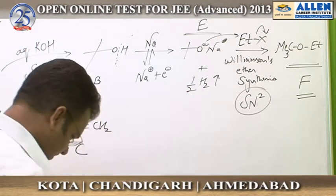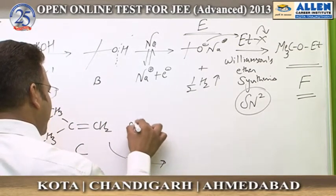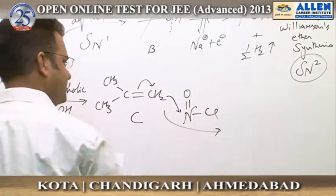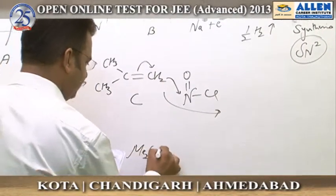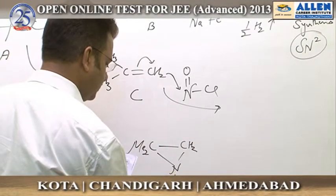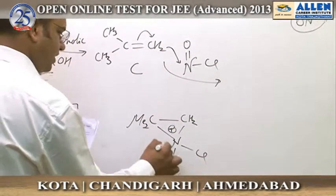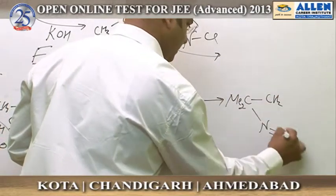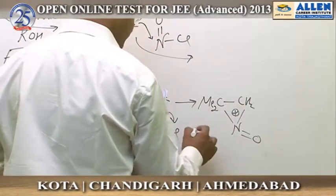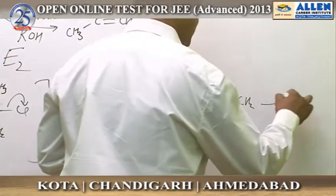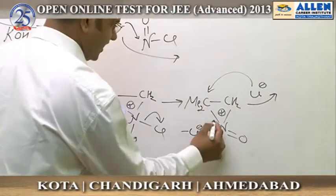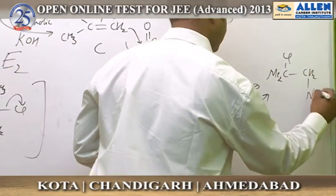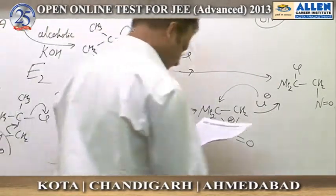On C, the reaction given is addition of nitrosyl chloride, NOCl. When the alkene attacks NOCl, a non-classical cation type species forms: Me₂C–CH₂–N=O with a positive charge, and Cl⁻ goes out. That Cl⁻ will attack on the more stable carbocation, giving Me₂C(Cl)–CH₂–N=O. This is your D.